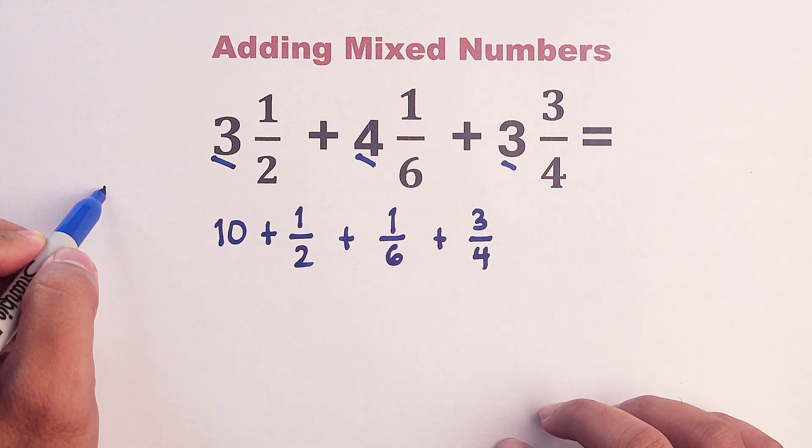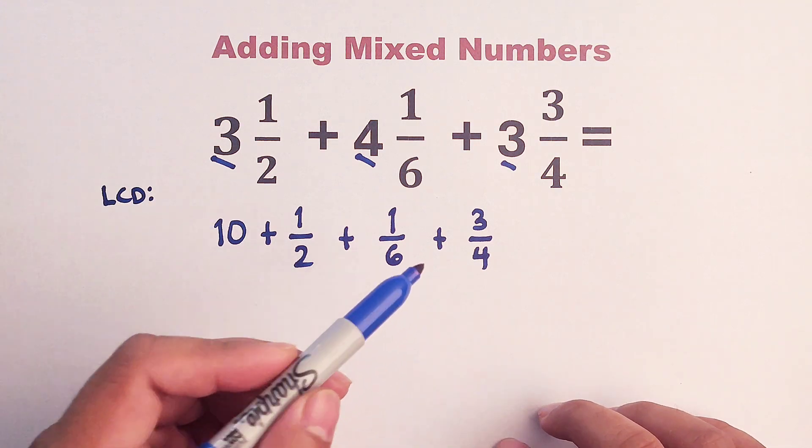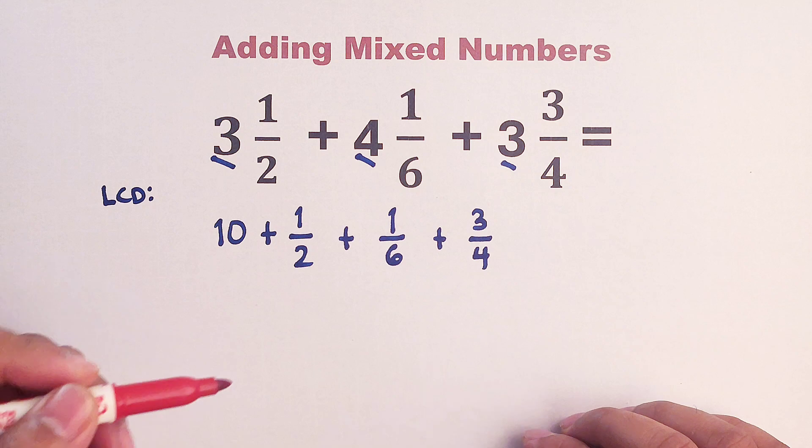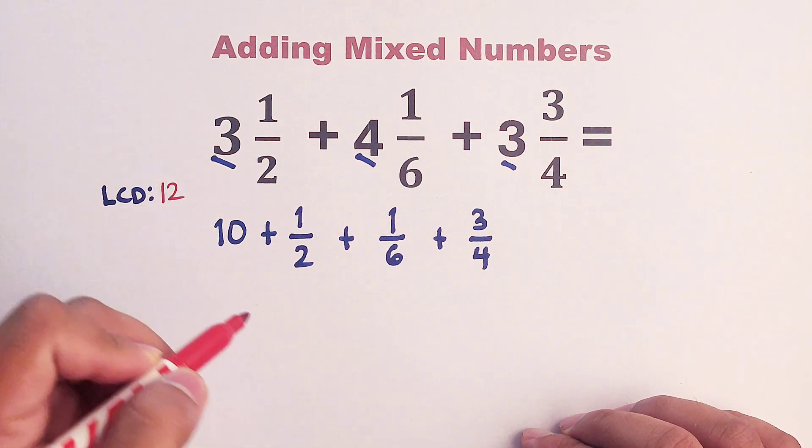So we will think of the LCD between two, six, and four. And what do you think is the LCD between these numbers? Okay, very good. The LCD is simply 12.